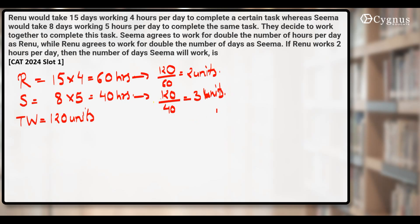The question says they agree to work together. They will not work for the same number of hours or days. Seema agrees to work for double the number of hours per day as Renu, while Renu agrees to work for double the number of days as Seema.